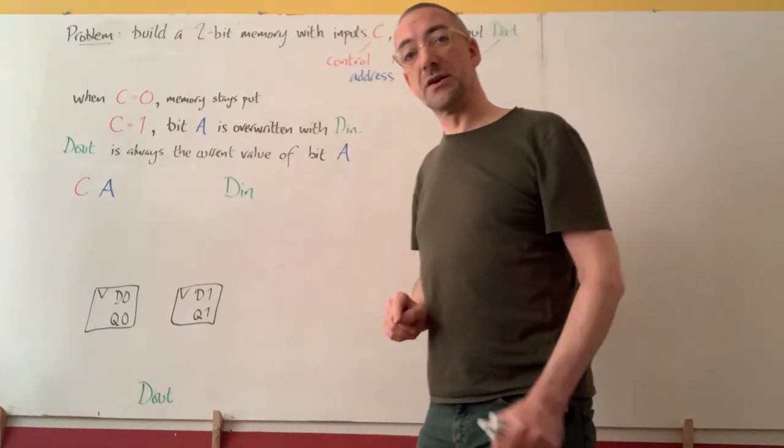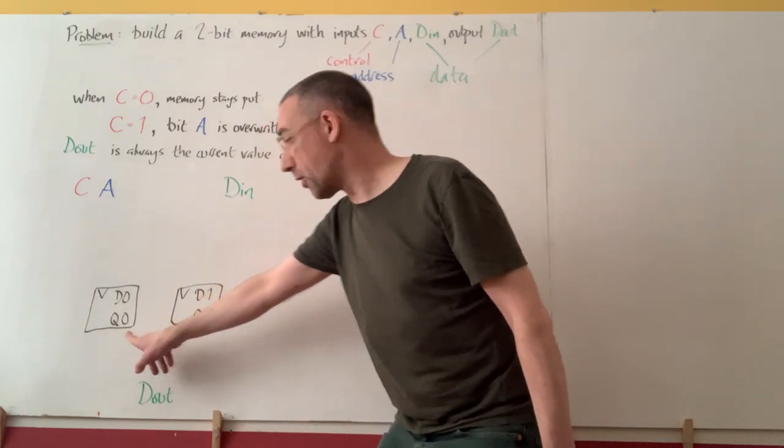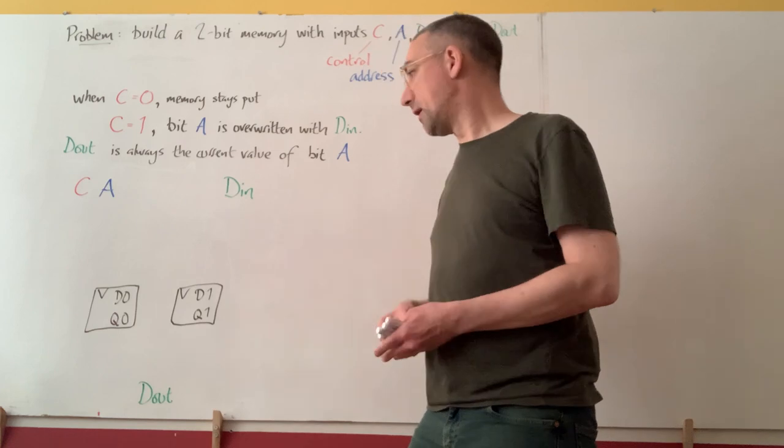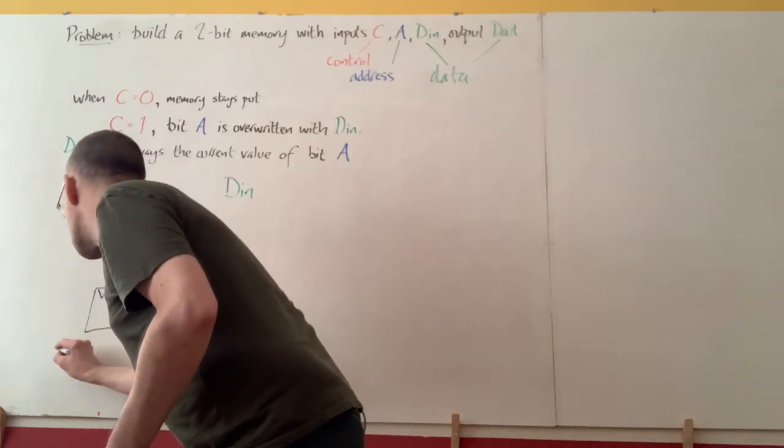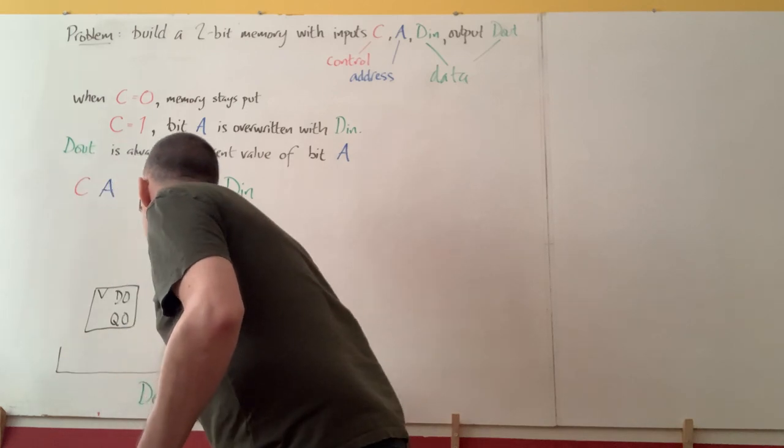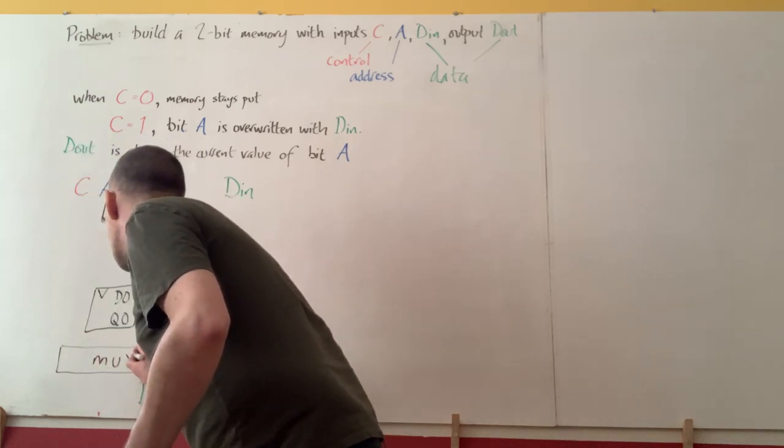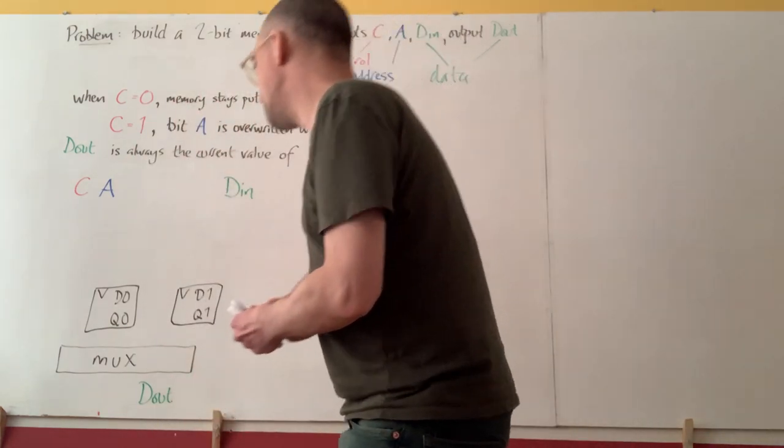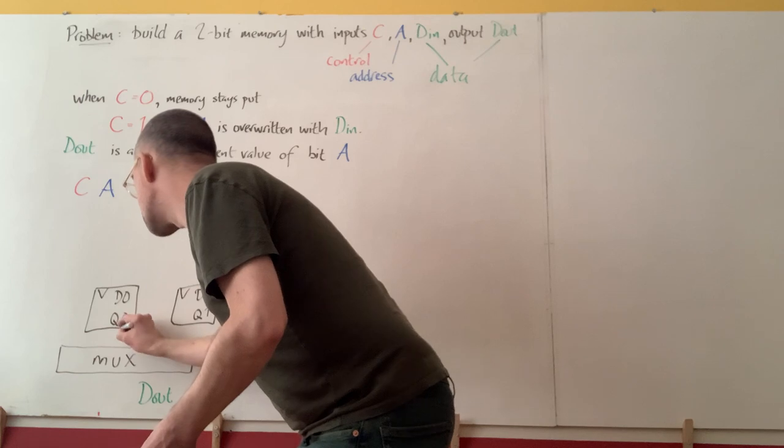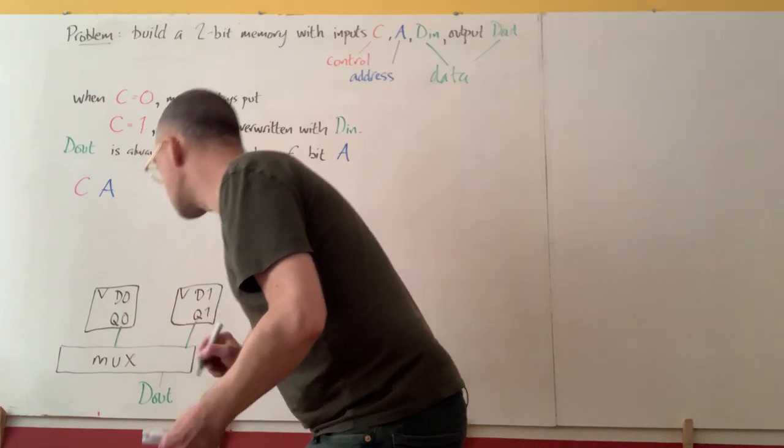A is going to tell us whether or not we want to read q0 or q1, and that's absolutely asking for a mux. Slap in a nice big mux just there. And we feed in q0, q1, and we take our output from the mux.